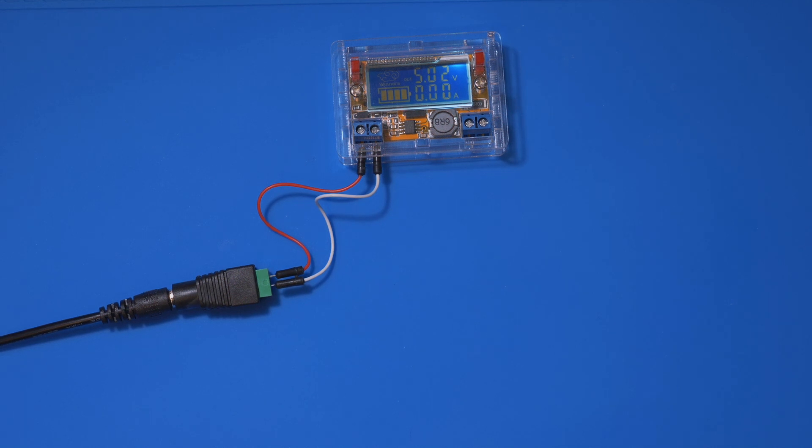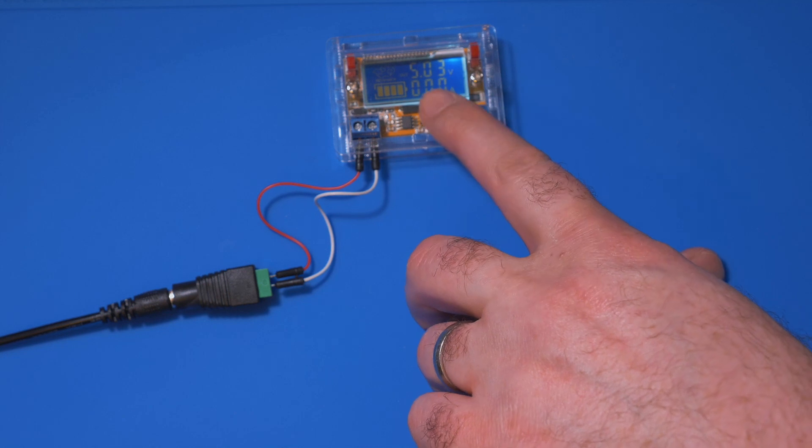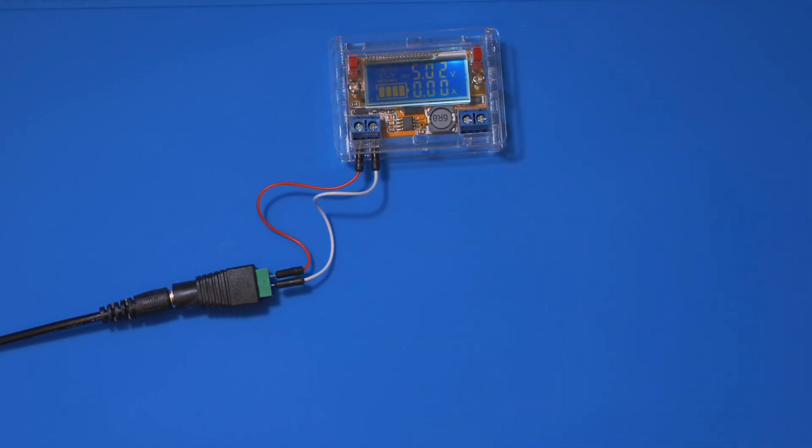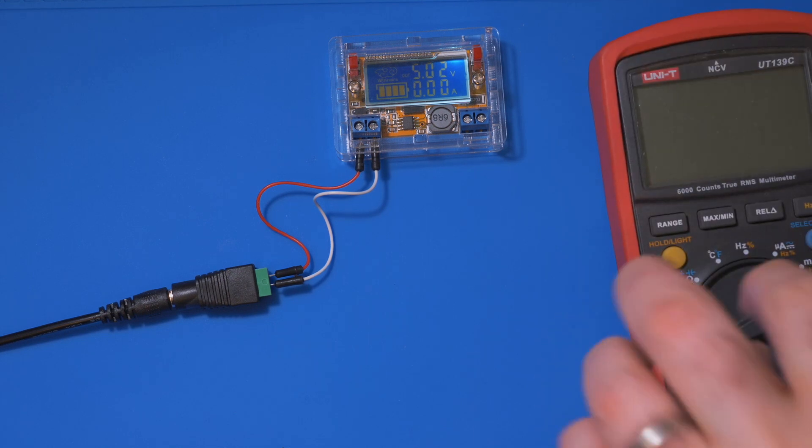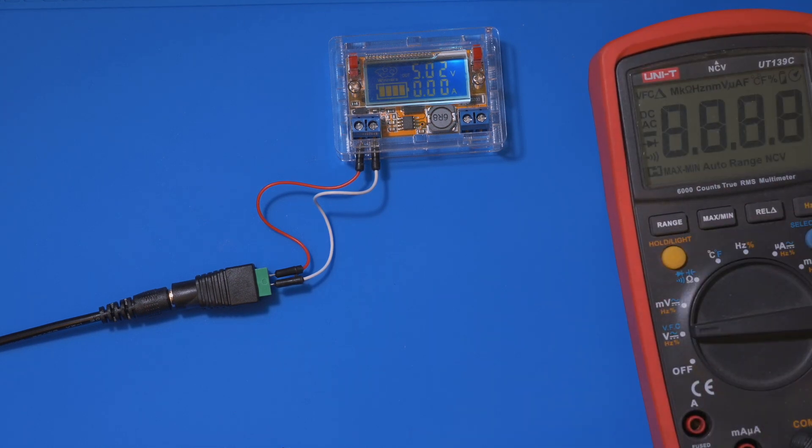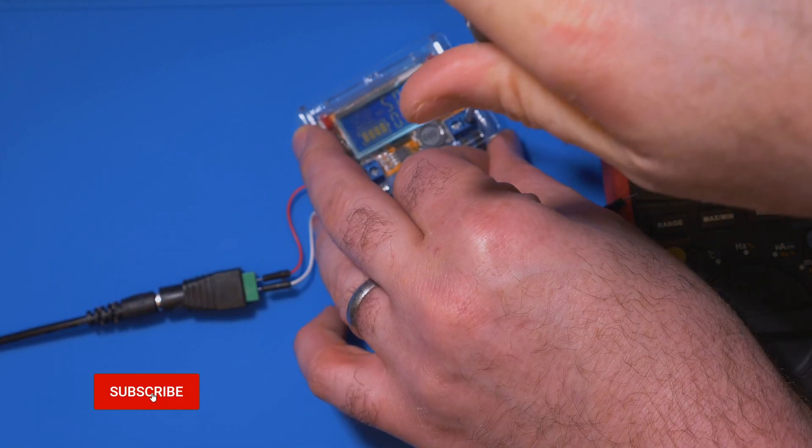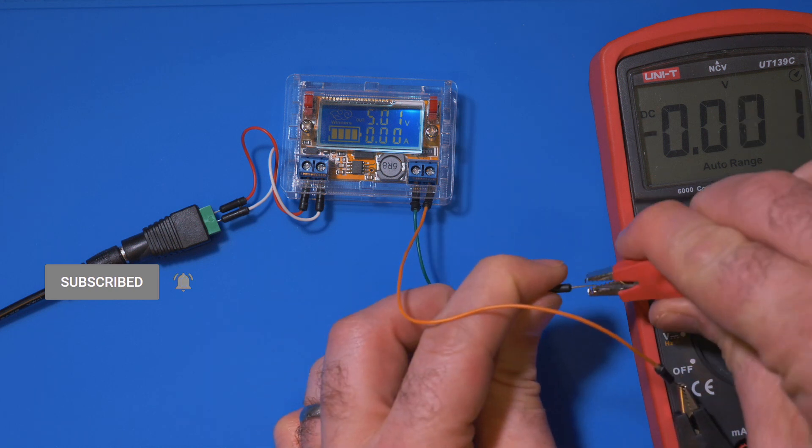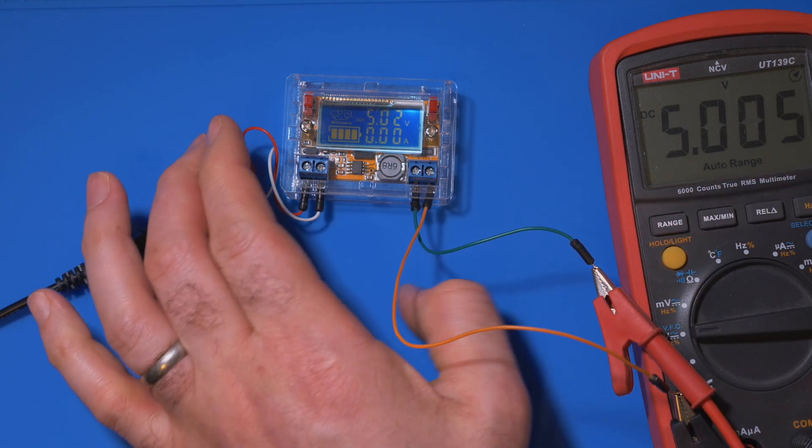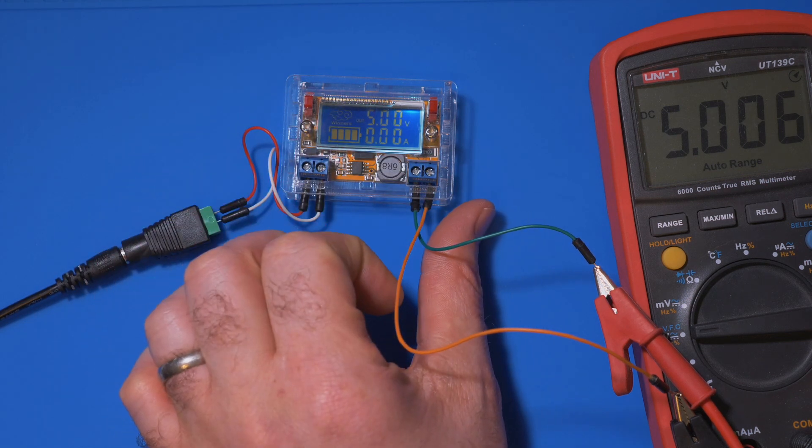So there we go. We have the step-down converter putting out 5.03 volts, but let's confirm that with our multimeter. So we're going to take that, stick that on to voltage. And there we go. That's pretty close. Not too bad for a device that costs 10 pounds.